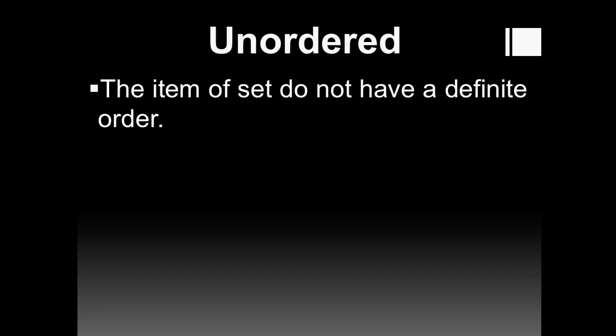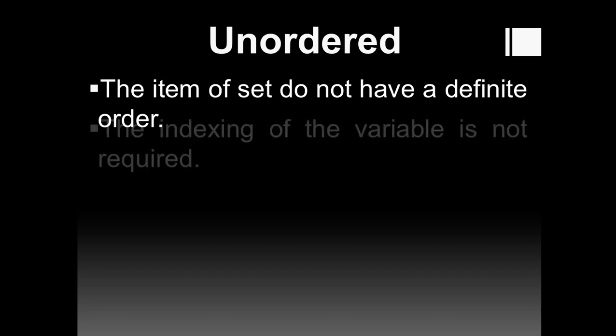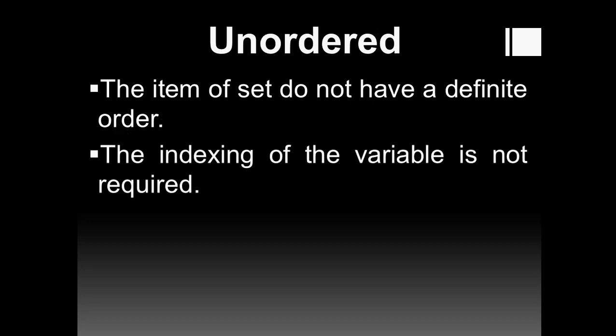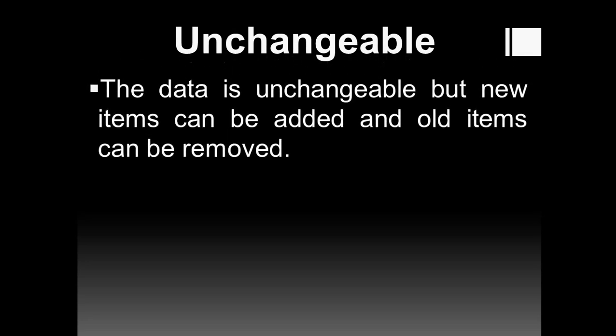The items of a set do not have a definite order, meaning indexing of the variable is not required. Next is unchangeable — what is the meaning of unchangeable? Data is unchangeable means it cannot be changed. However, new items can be added and all items can be removed.